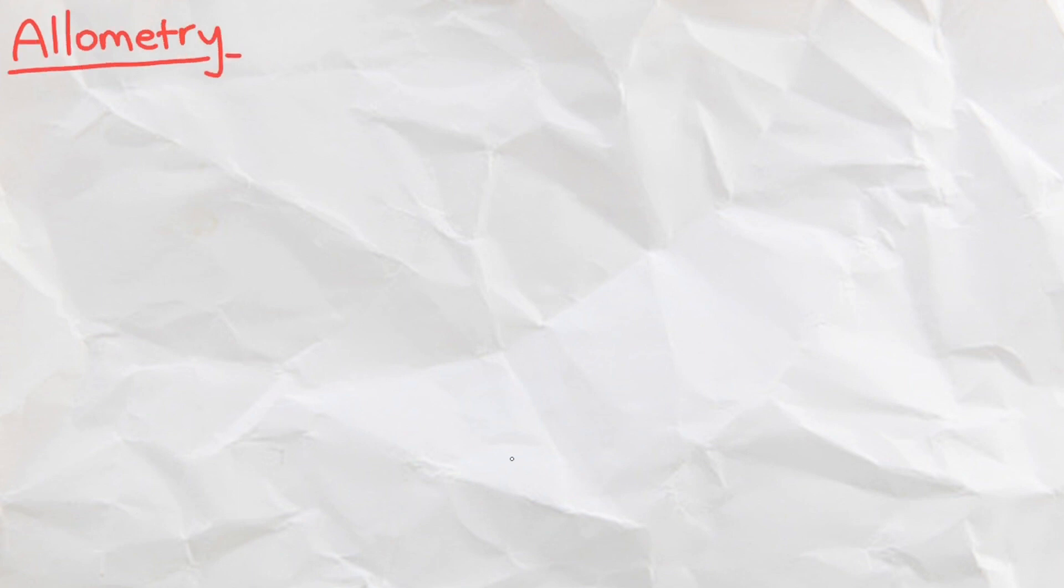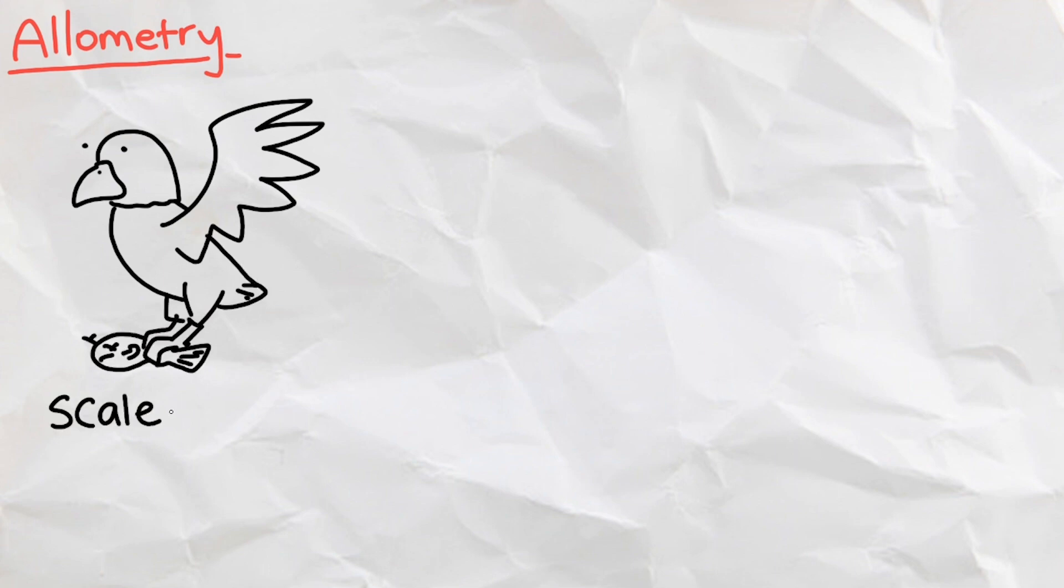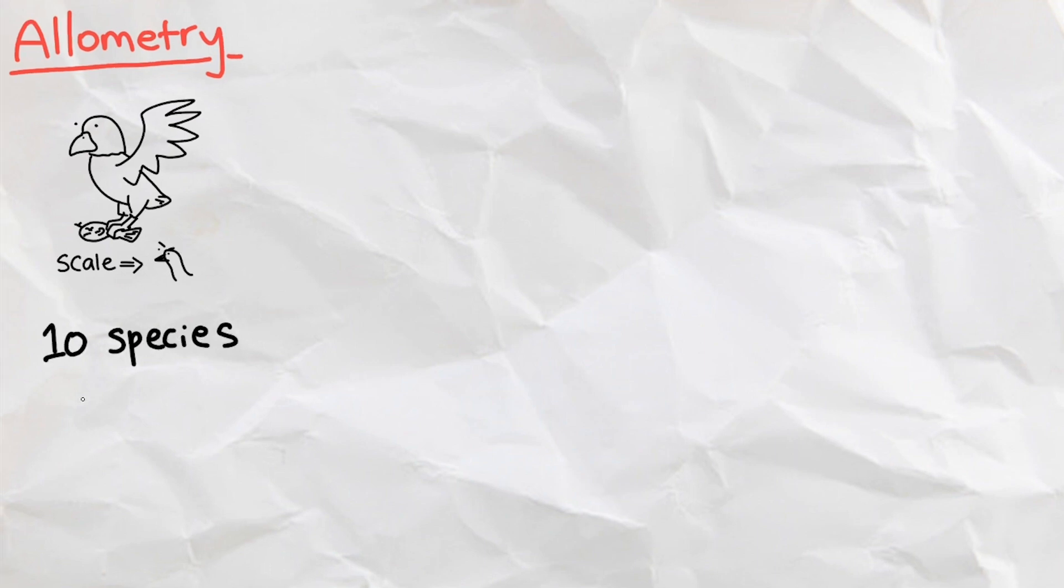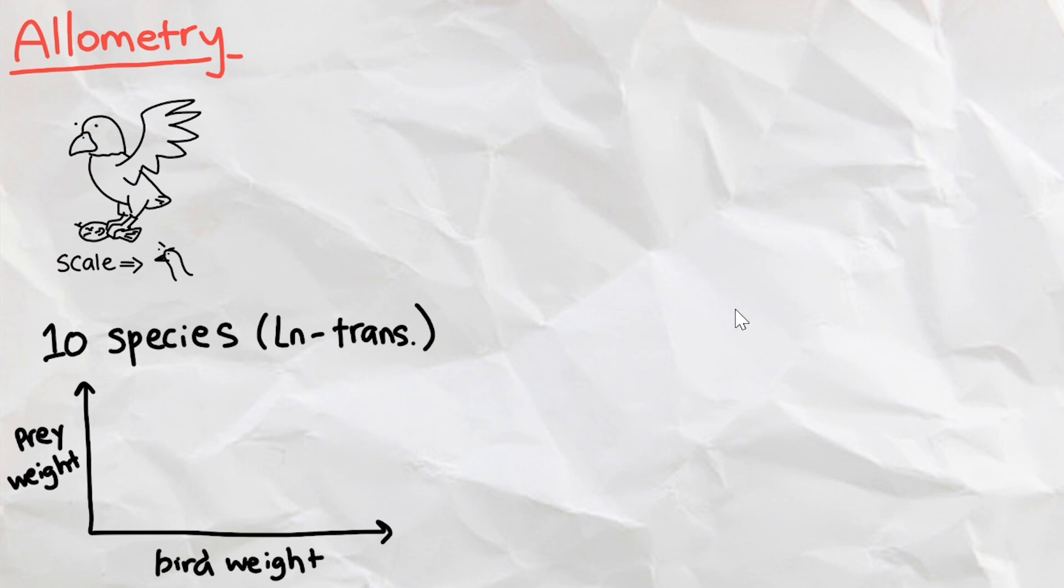Next, we will try to find the carrying capacity using scaling, or allometry. If we found how much weight an eagle can carry, perhaps we can scale that relationship up to how much weight a Canada goose can carry. Therefore, we found 10 different species of birds of prey and plotted their weights against the average weight of prey that they can carry.